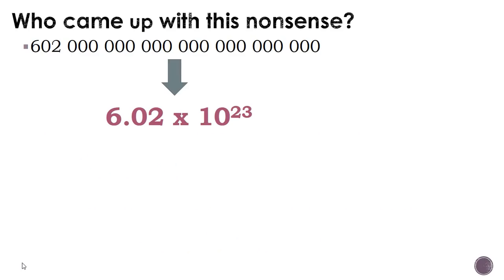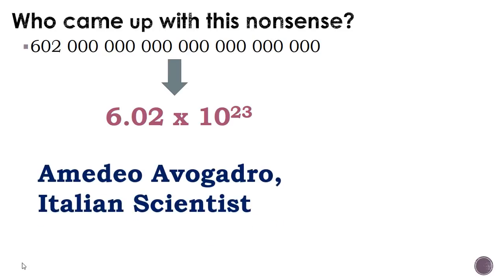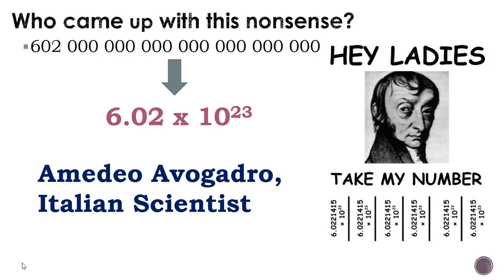So who came up with this nonsense? There was this Italian scientist called Amedeo Avogadro. He looked something like this. He came up with this number called 6.02 times 10 to the 23rd, which we now know is a mole, or sometimes we like to say it's Avogadro's number.